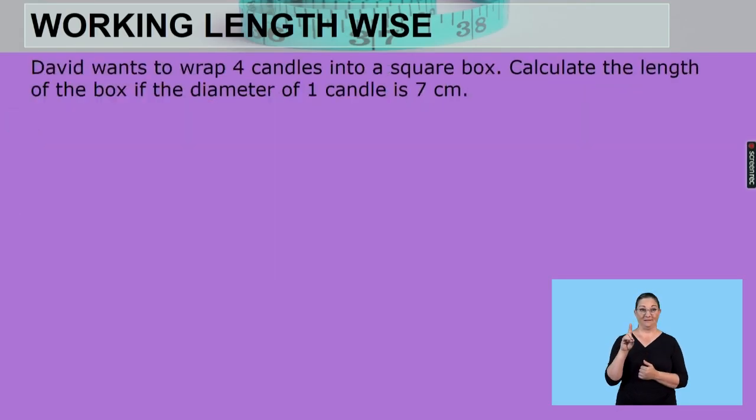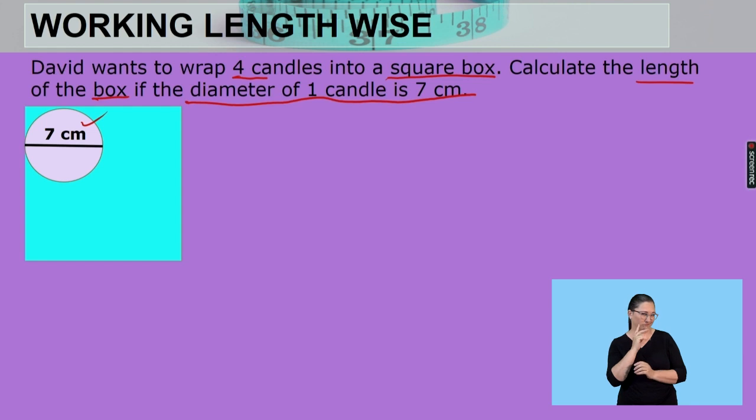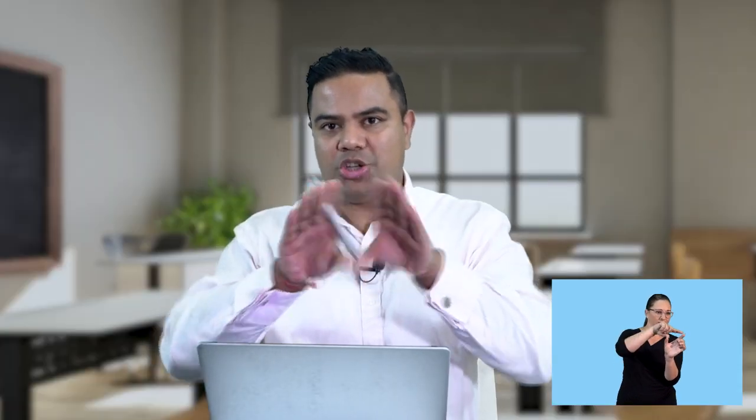Here we go. David wants to wrap four candles into a square box. Calculate the length of the box if the diameter of one candle is seven centimeters, as we've shown here on the diagram. So what's happening now? If you look very carefully here, for this particular example, the diameter fits from one end there up till that point. If we fit in another candle, that diameter will then touch this one. And it'll continue again at seven centimeters. Do you see that? So these two things, because they touch, the diameters then give us the length.